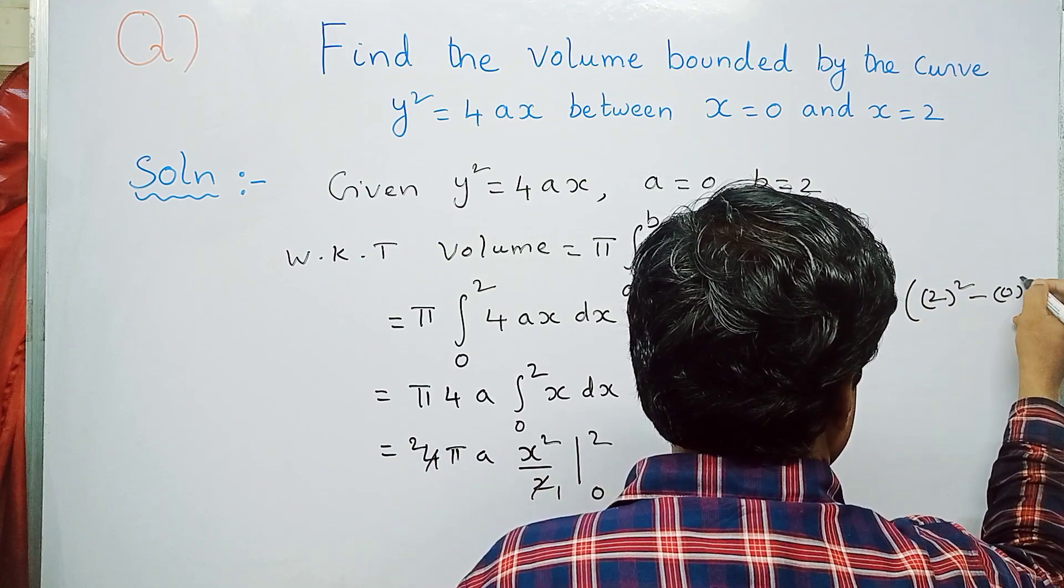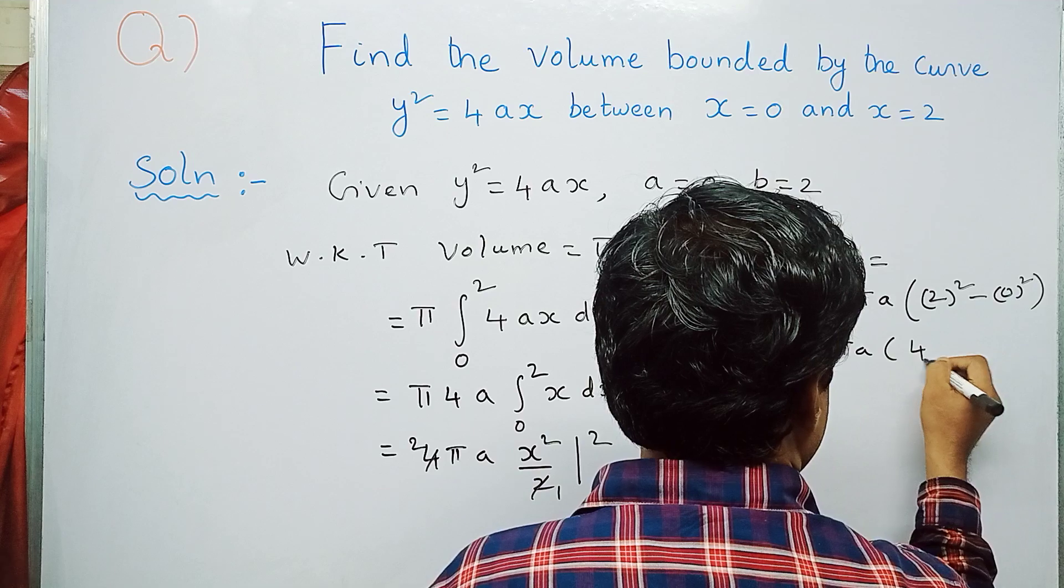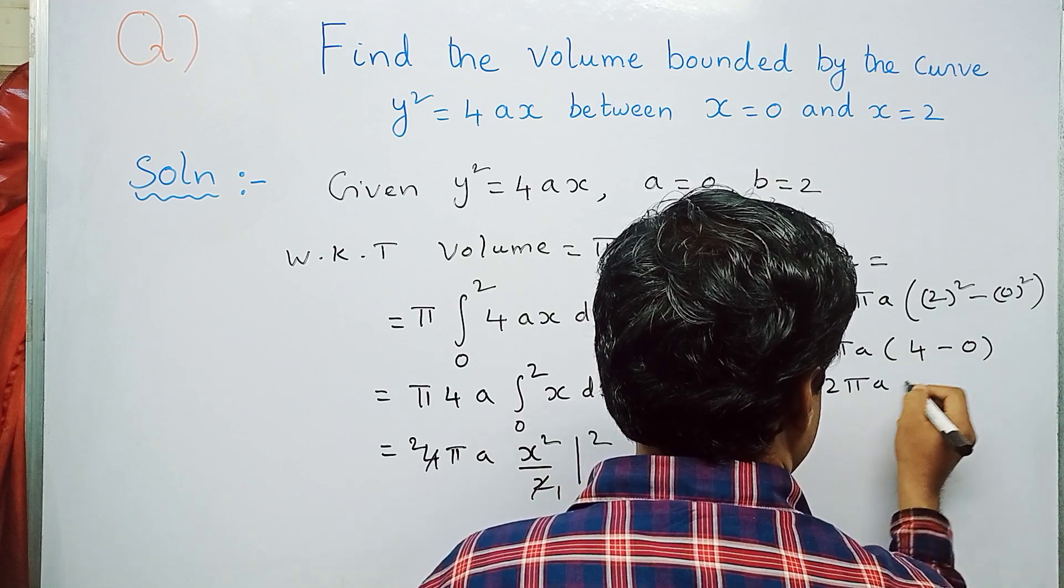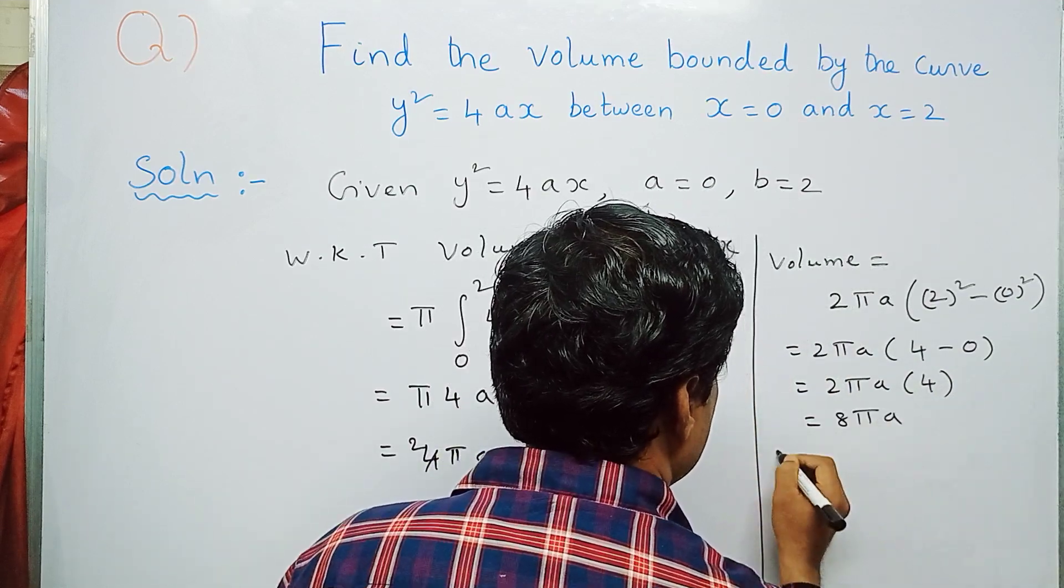So this is equal to 2πa. Now 2² is 4 minus 0² is 0, so this is 2πa·4. 2πa·4 minus 0 is 4, now 4·2 is 8πa.